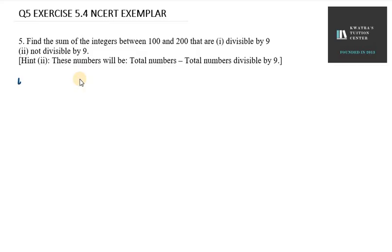So my AP would be 108 starting with 108 as 108 is divisible by 9. So next number will be 117, then next will be 126, and so on till 198 as 198 is divisible by 9.